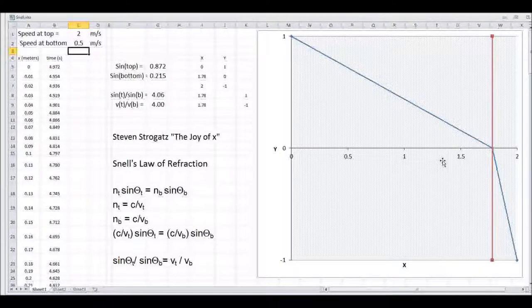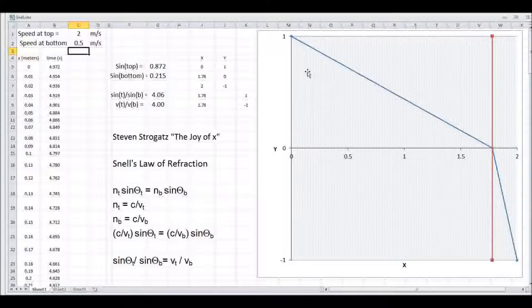Now, the same is true of light. If light is traveling from one medium to another, let's say it's going from this point to this point, and this is the top medium, it might be air, the bottom might be diamond, it gets refracted.